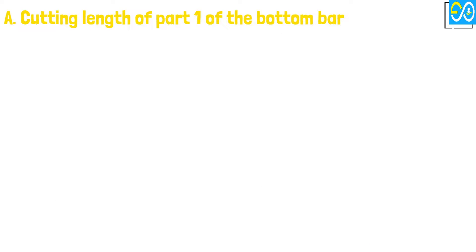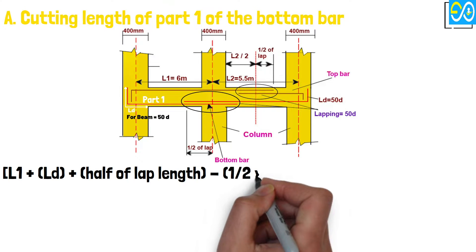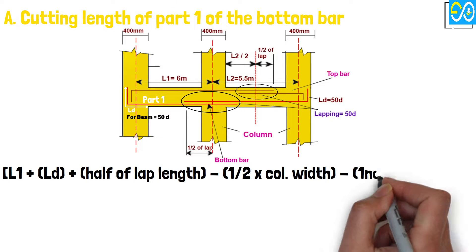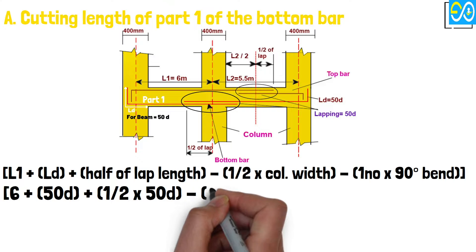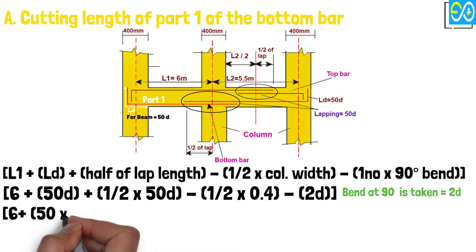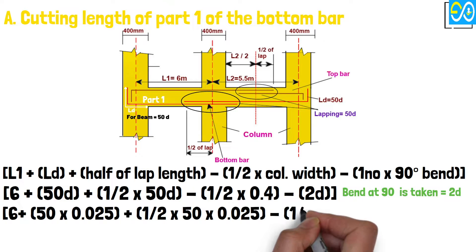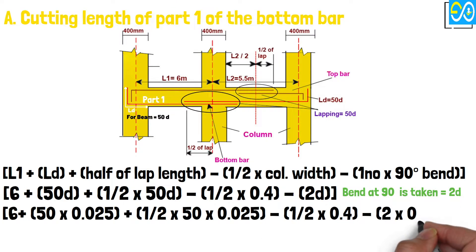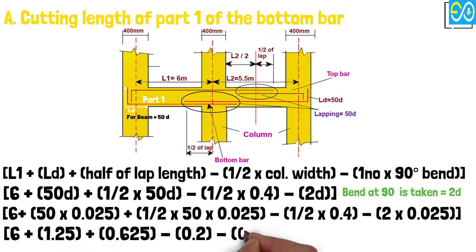Cutting length of Part 1 of the bottom bar equals L1 plus Ld plus half of lap length minus half times column width minus 1 number times 90-degree bend. Equals 6 plus 50D plus half times 50D minus half times 0.40 minus 2D. Equals 6 plus 1.25 plus 0.625 minus 0.2 minus 0.05, equals 7.625 meters.